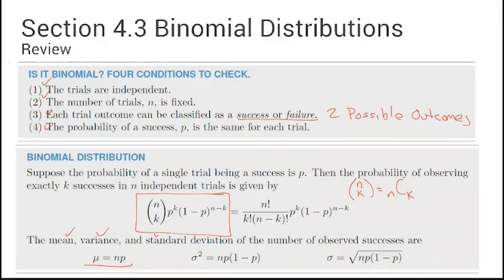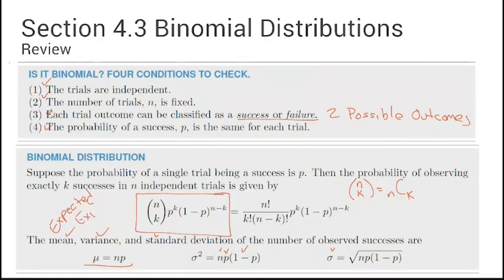The variance is the mean times the probability of success times the probability of failure. We find the standard deviation by taking the square root of the variance. On a coin flipping or test-guessing scenario we can figure out our expectation — the mean. If you see the word 'expected' or 'expectation,' they are asking you to find the mean of a distribution.